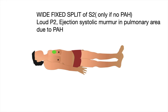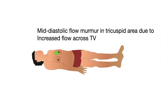We hear a wide fixed split of the second heart sound, which is characteristic of an ASD, but this is not present if there is pulmonary artery hypertension. We also hear a loud P2 and ejection systolic murmur in the pulmonary area due to pulmonary artery hypertension. We can also hear a mid-diastolic flow murmur in the tricuspid area due to increased flow across the tricuspid valve.